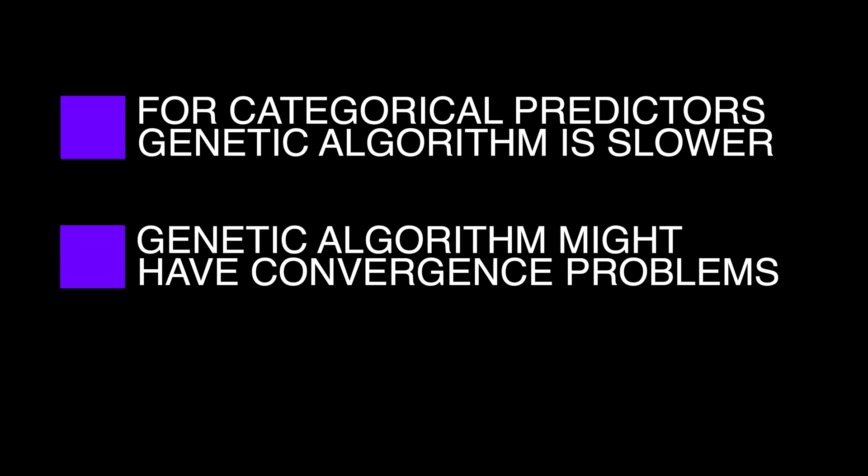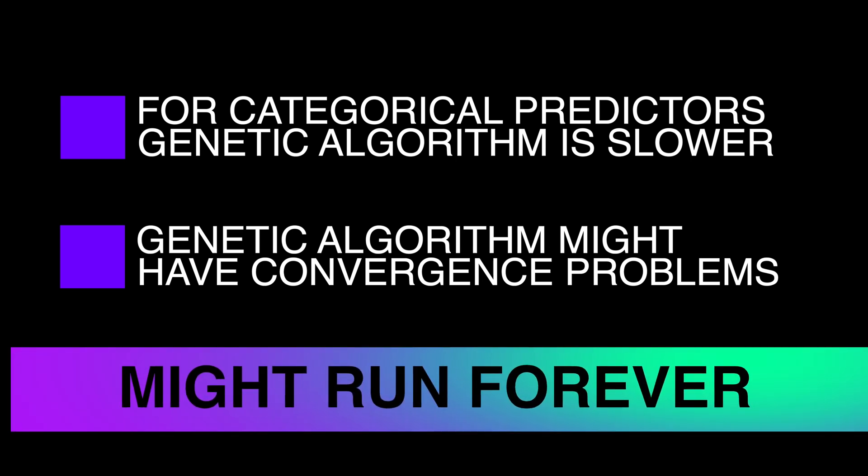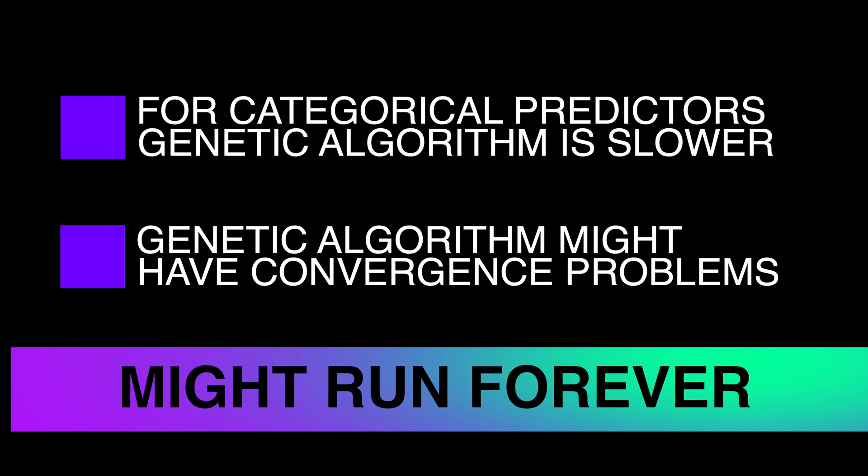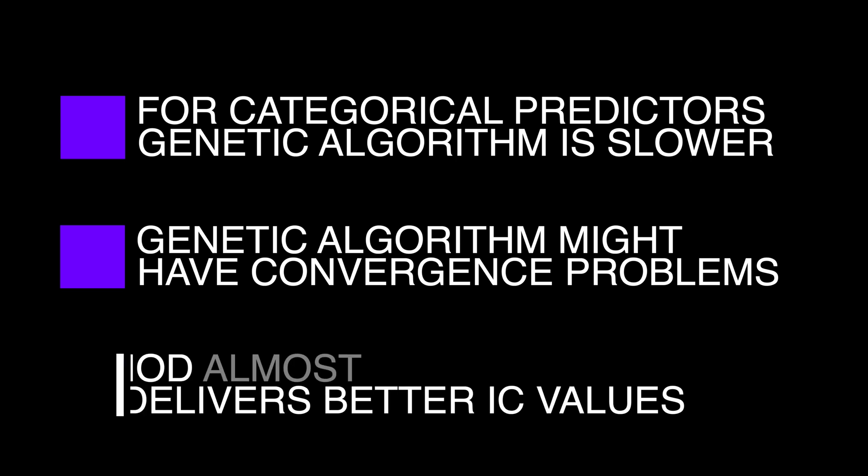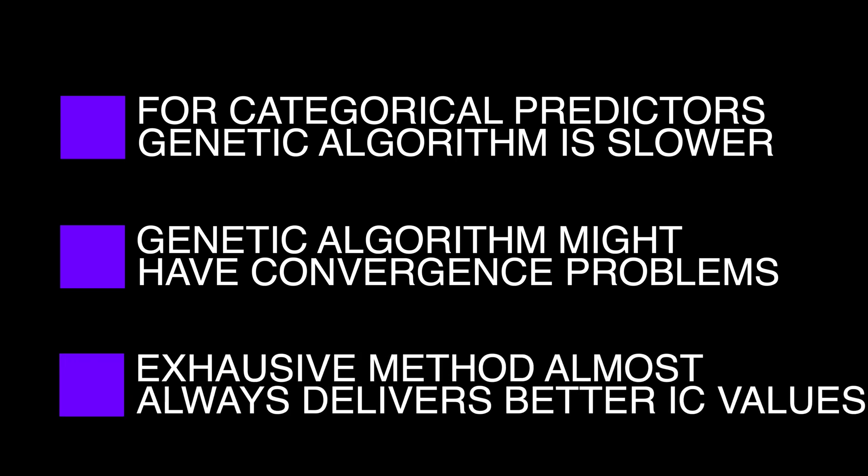Moreover, genetic algorithm might have convergence problems and might run indefinitely long, without you having any idea of when or if it ever stops. And lastly, exhaustive method almost always delivers better information criteria values.